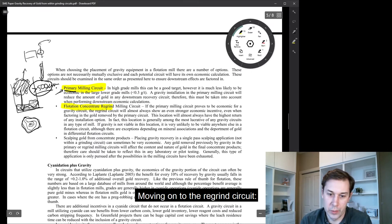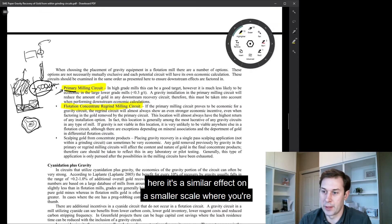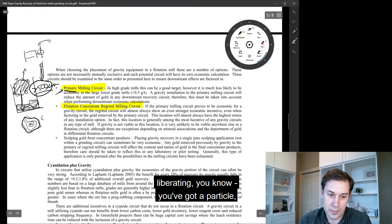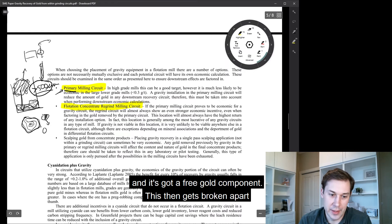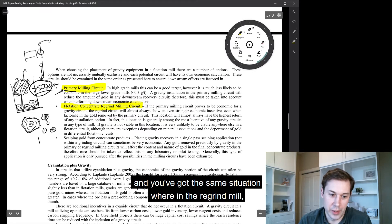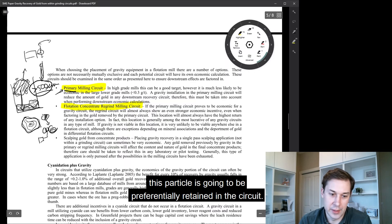Moving on to the regrind circuit. Here it's a similar effect on a smaller scale where you're liberating a particle that's probably locked. It's got some mineral in it, some target mineral in it, and it's got a free gold component. This then gets broken apart. And you've got the same situation where in the regrind mill, because the cut size is finer, this particle is going to be preferentially retained in the circuit.